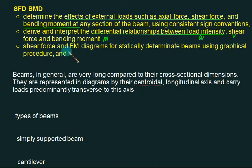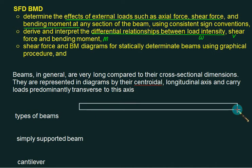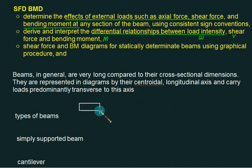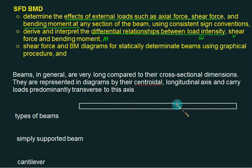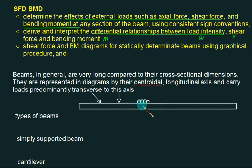Before we start, let us define the beam itself. A beam in general is very long compared to its cross-sectional dimensions. Usually we have two supports: one support is fixed and one is a roller support. Beams may carry various types of loads — a point load, UDL, moment, eccentric load, and all such types of loads.